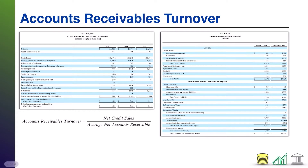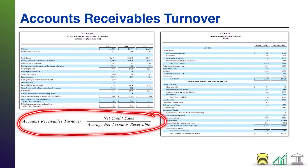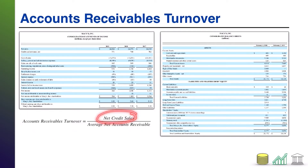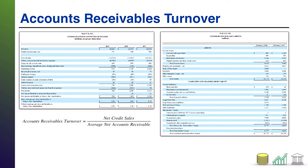First up, something called the accounts receivable turnover ratio. You see the equation down here: accounts receivable turnover equals your net credit sales divided by your average net accounts receivable. What this is telling us about a company is how often you are essentially collecting your average AR that you keep on hand.